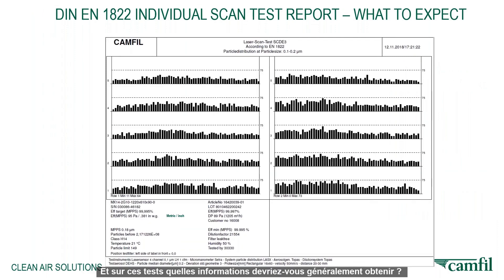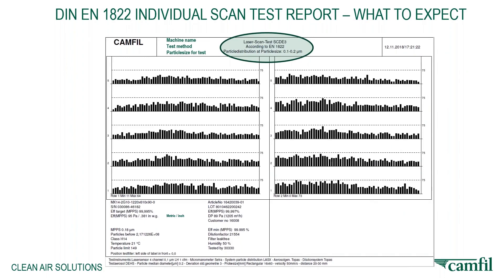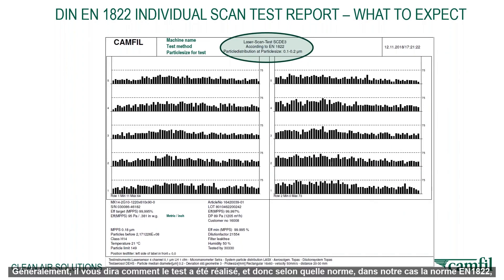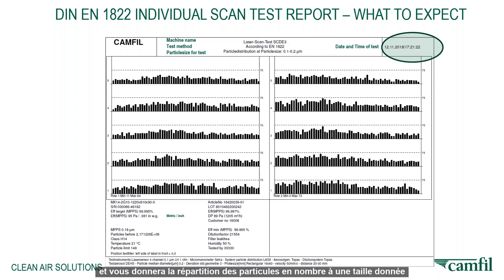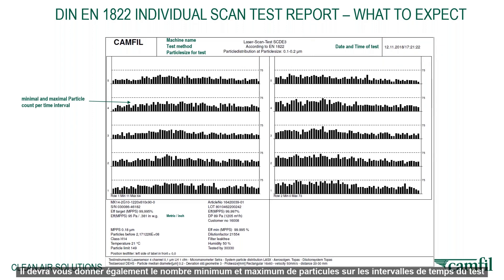On those test certificates, what should you typically get? It must tell you how the test was carried out — so according to what standard, in this case EN1822 — the type of equipment used, the laser scan test, and a particle distribution at a number of particle sizes. It must give you the date and time of the test, where and when it was carried out, and the minimum and maximum particle count over the time intervals of the test.